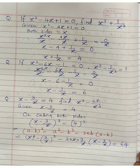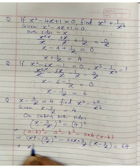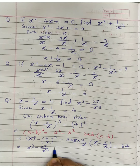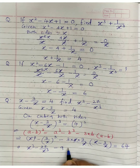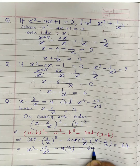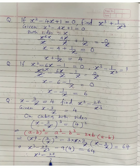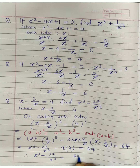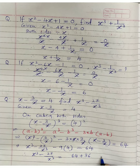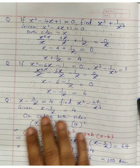So: x cube minus 27 upon x cube, minus 9 times x minus 3 upon x, equals 64. Substituting x minus 3 upon x equals 4: x cube minus 27 upon x cube minus 36 equals 64. Therefore x cube minus 27 upon x cube equals 64 plus 36, which is 100. Be careful about these changes — rest of the procedure remains the same.